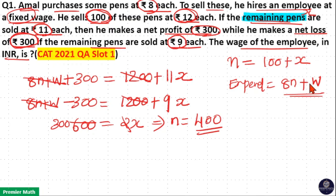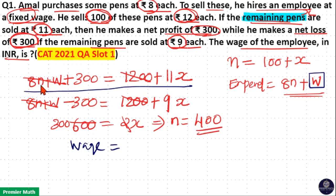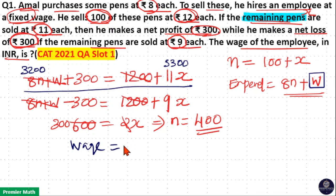We need to find out the wage of the employee. Substituting N equals 400 in the first equation: 8N means 8 into 400, that is 3200. 11X means 11 into 300, that is 3300. So 3300 minus 3200 is 100. 1200 plus 100 is 1300. 1300 minus 300 equals 1000. So the wage of the employee is equal to Rs. 1000.